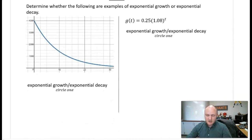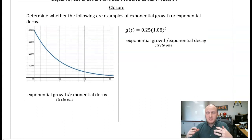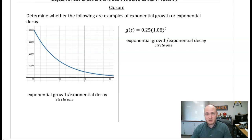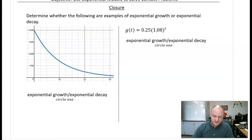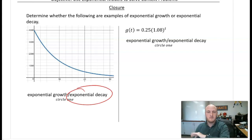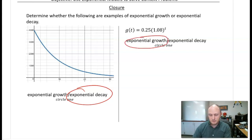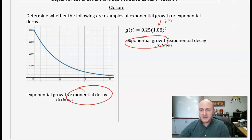Closure: how do you know if something is exponential growth or exponential decay? You can tell in two ways — graphically, or by looking at the algebraic representation. A falling curve is exponential decay. If the base in the function is bigger than one, that is exponential growth. That's going to do it for this lesson — I hope you learned how exponential growth and decay models are represented in situations around us all the time.